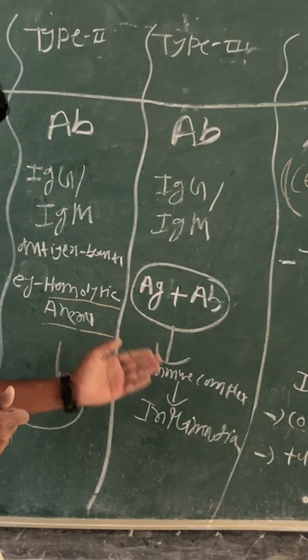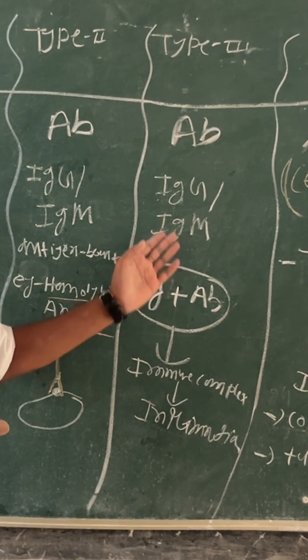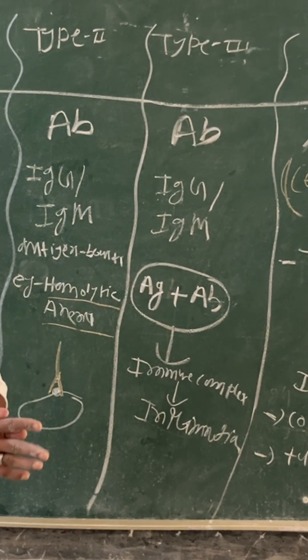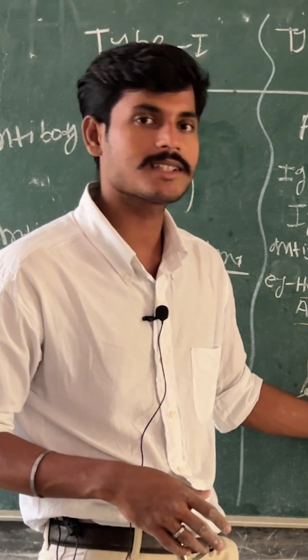In the third type, because the antigen is free and antibodies are there, they will form the antigen-antibody complex, and that causes inflammation.